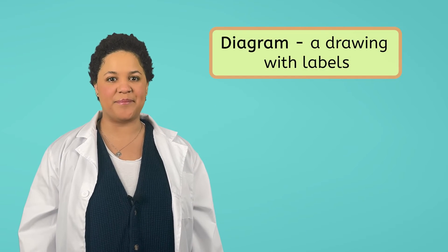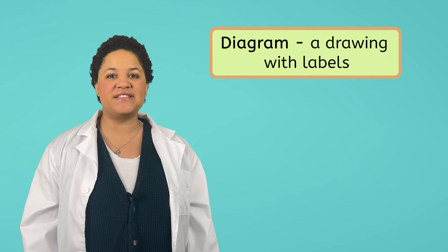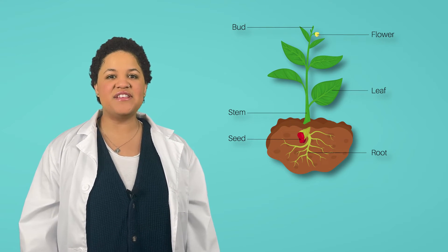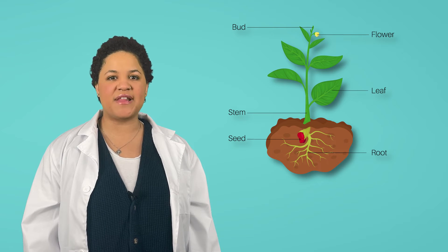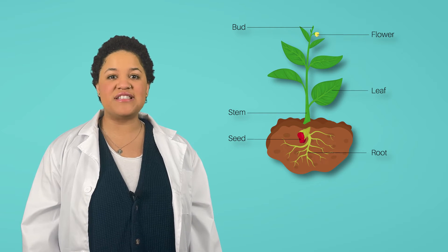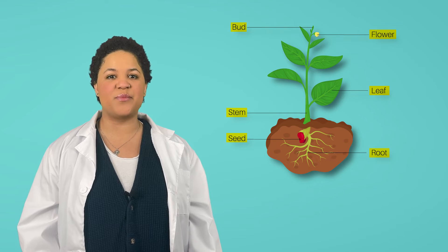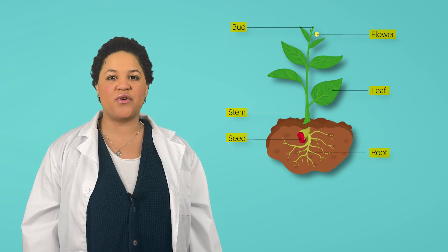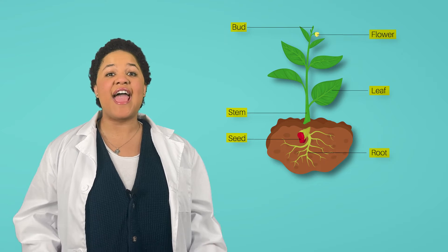There is a special kind of picture in science called a diagram. A diagram is an ABCD drawing with labels. Here is an example from Mia's investigation. In this diagram, she labeled parts of the plant she was investigating. You can see she used words and lines to point to the different parts of the plant. Diagrams are a great way to record your learning using pictures and words.